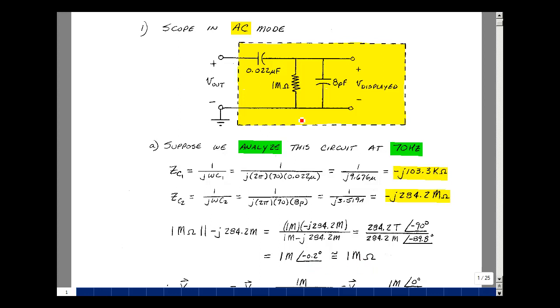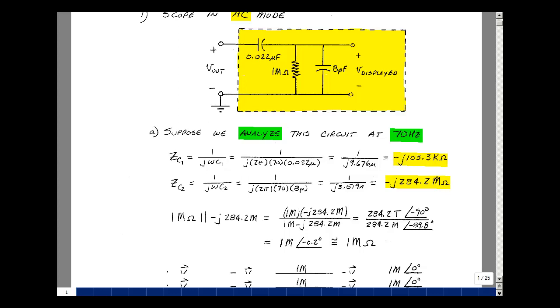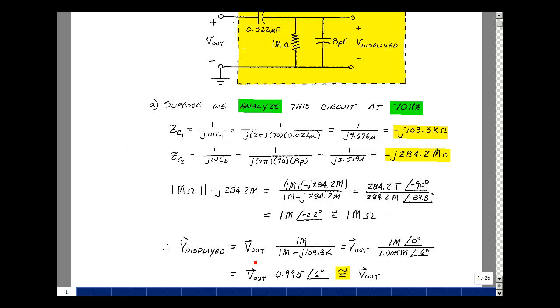That forms a voltage divider with the 0.022 microfarad capacitor, and let's find out what the value then of our displayed voltage will be. Our input is V_out, which is a phasor, and then we've got this parallel combination dominated by the 1 megaohm resistor, voltage divided with the 0.022 microfarad capacitor, whose impedance is minus j103.3k. Magnitude of this is 1 million, the angle is 0.